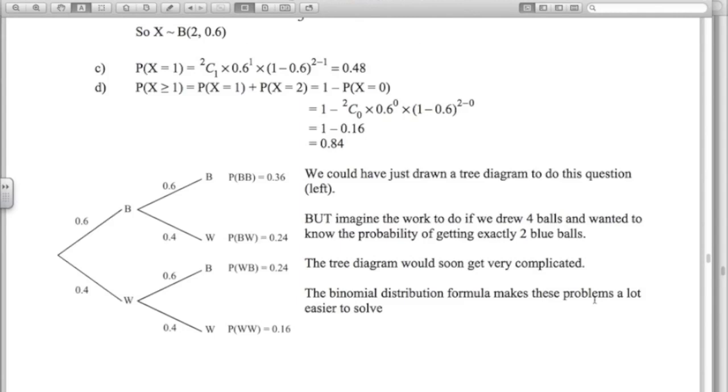Note that we could have drawn a tree diagram here and got the probabilities from the tree diagram. That would be really easy. But things could get complicated if we do 4 draws and say we wanted to know the probability of getting exactly 2. What if we had 10 balls, 10 draws? You could see the tree diagram would be a nightmare. You'd have 2 branches, then 4, then 8 branches. After 4 draws, there'd be 16 branches. After 10 draws, there'd be 1,024 branches. And it would get very complicated. This formula here makes these problems a lot easier to deal with rather than drawing tree diagrams.